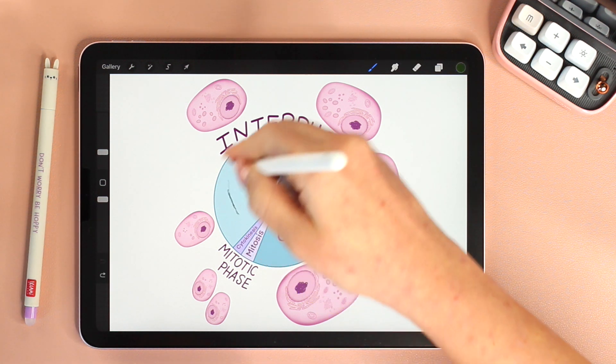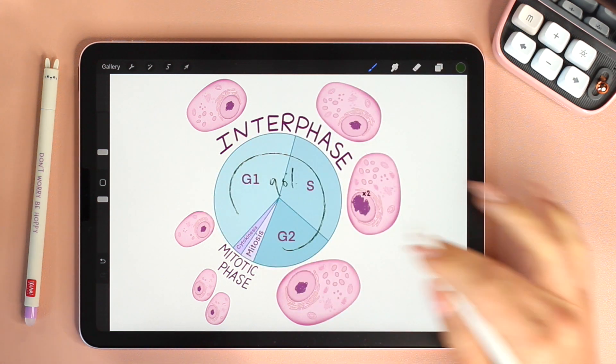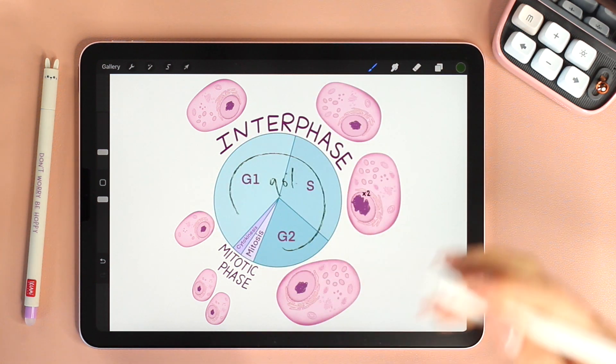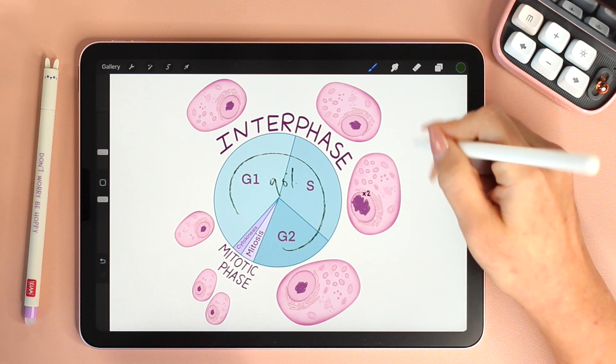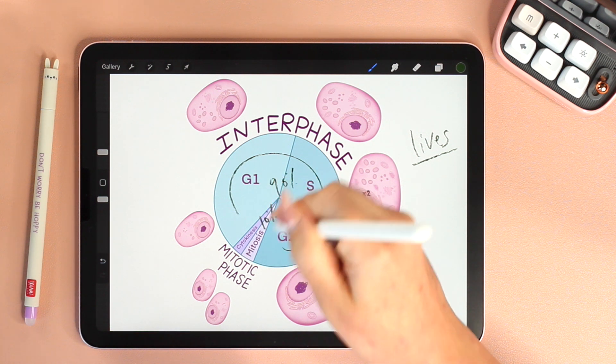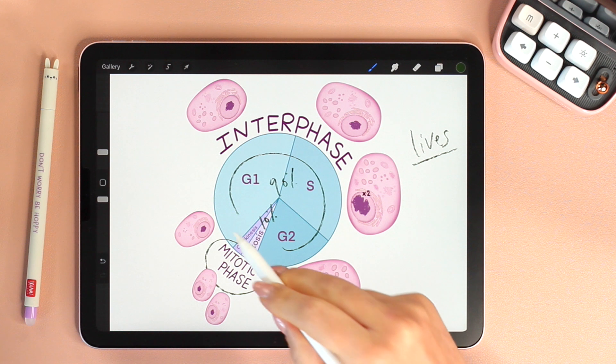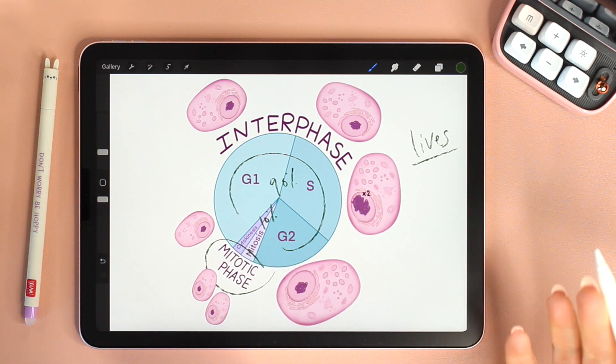A cell spends 90% of its life in interphase. It is the period of time that the cell lives its life. And the last 10% is the mitotic phase, which includes mitosis and cytokinesis. This is the period of time in which the cell divides.